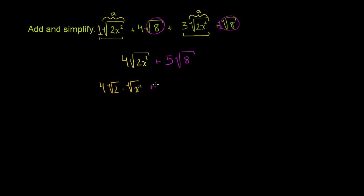And then we have plus 5 times — now 8 can be written as a product of a perfect square and a not-so-perfect square. 8 can be written as 4 times 2. So if we view this as the principal root of 4 times 2, we can rewrite this as 5 times the square root of 4 times the principal root of 2.